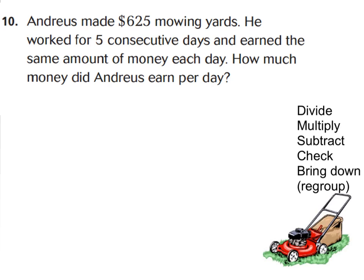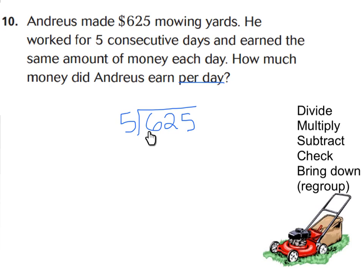Let's do our next problem-solving question. Andreas made $625 mowing yards. He worked for 5 consecutive days and earned the same amount each day. How much did he earn per day? If I divide $625 by 5 days, I'll find the amount he made each day. Start with step 1: divide the hundreds place. Do I have enough groups of 100 to put into 5 groups? Yes — so my answer starts in my hundreds place. 6 groups of 100 divided into 5 groups: each group gets 1 group of 100.